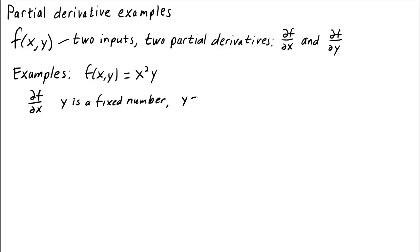For example, let's pretend that y is 47. Then if we try to take the partial derivative with respect to x of x squared times 47, we know we can take the 47 out of the derivative. And so we have 47 times the derivative with respect to x of x squared. Well, that's just 2x.